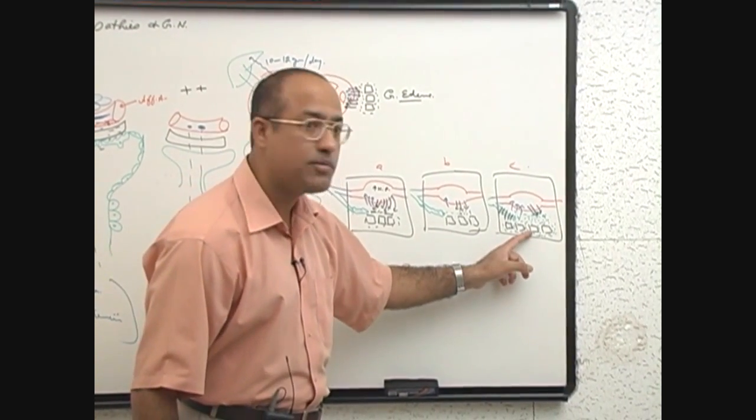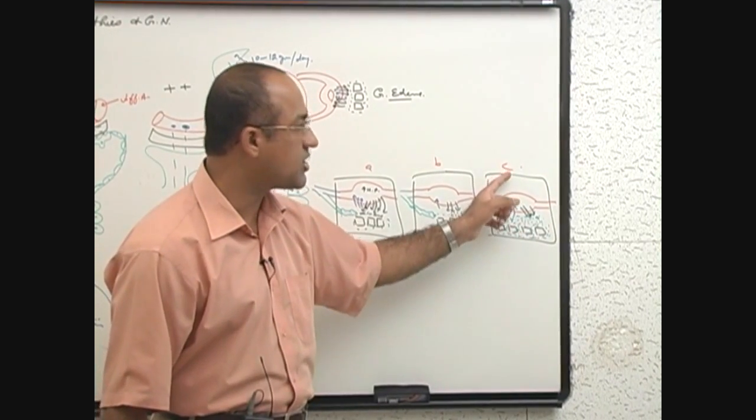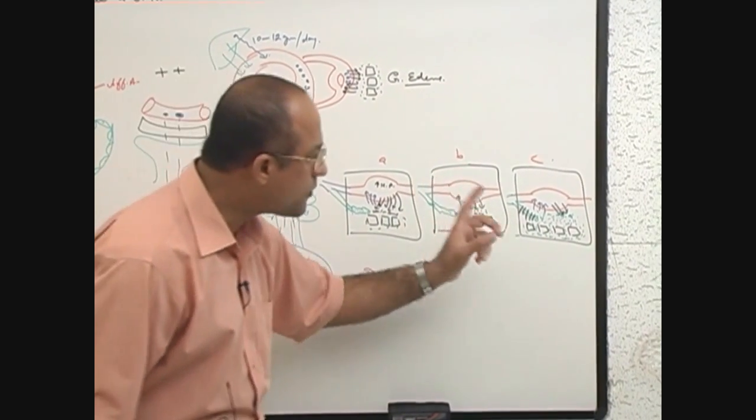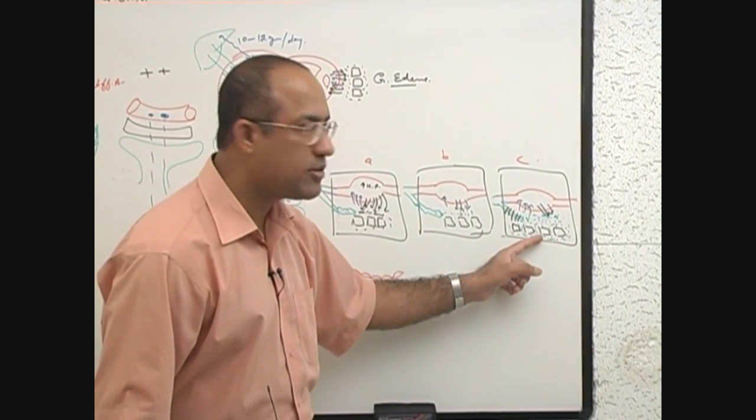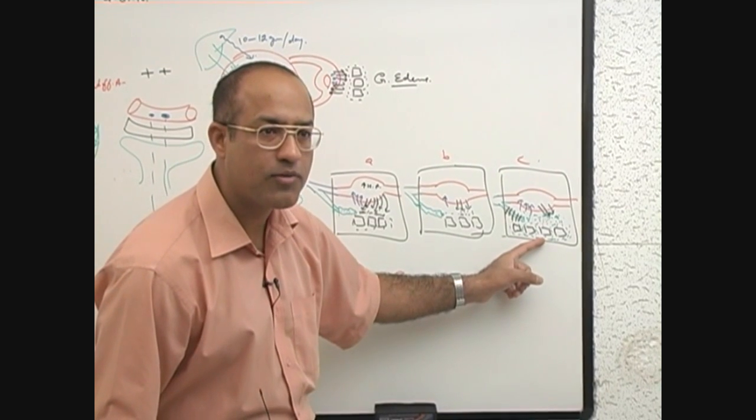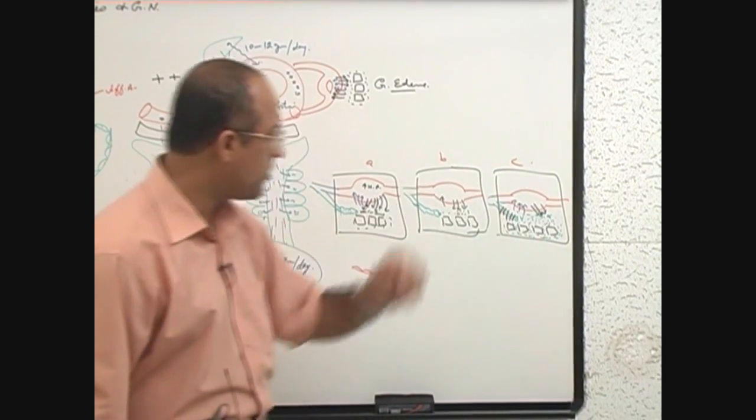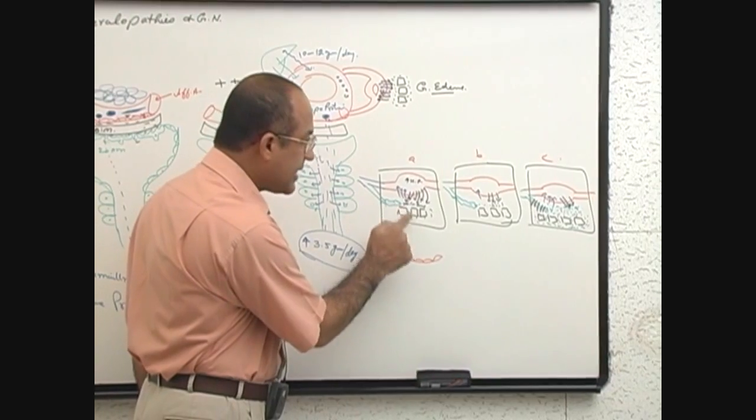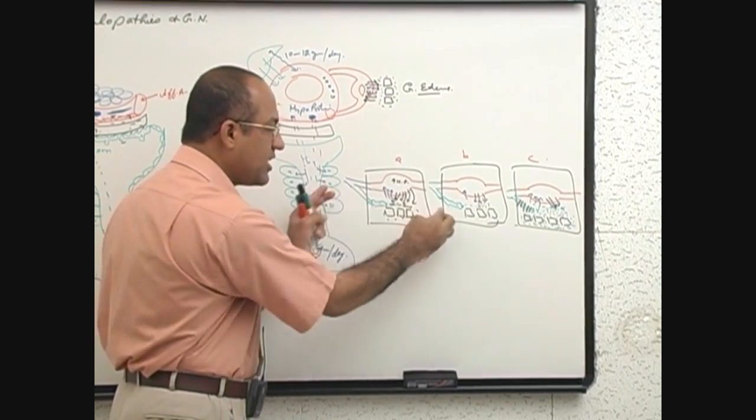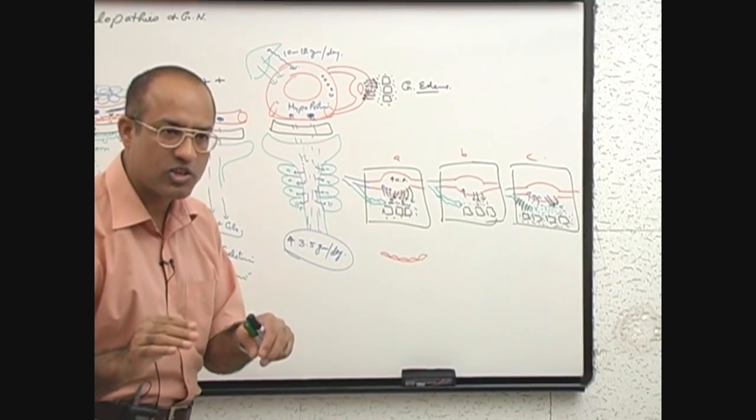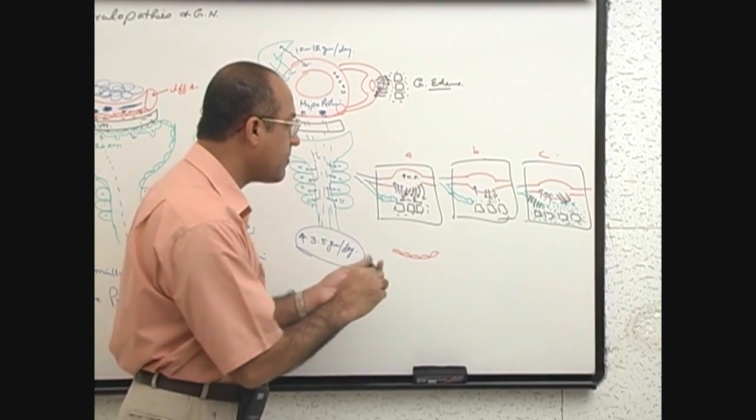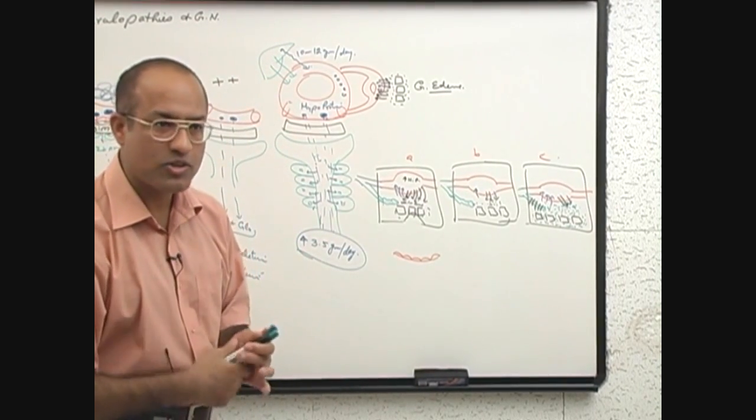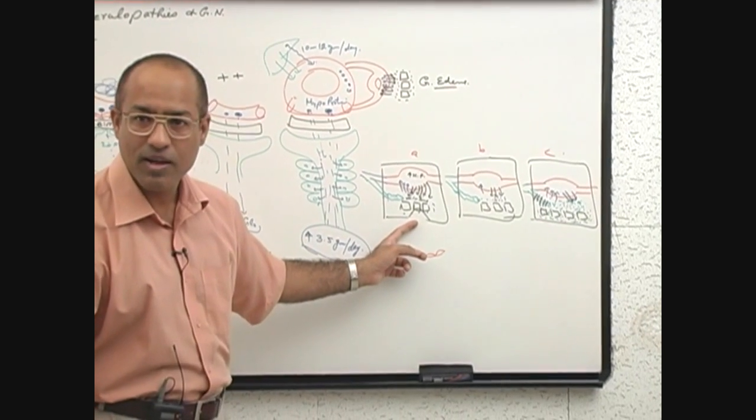So here, edema will be formed. But this edema in patient C is different than the edema in patient A and B. What is the difference? The difference is that here, edema fluid is held tightly with infiltrated proteins. Now, if you press this tissue with finger, here is only fluid. When you press with the finger, fluid is displaced. Edema fluid is displaced. Right? So you will be producing a pit here. With the finger you can produce a pit here. So this is called pitting edema.